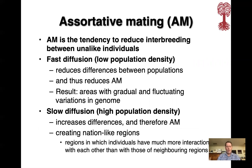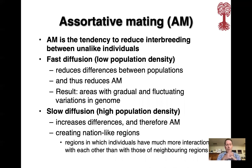Another factor to consider is assortative mating — the tendency to reduce interbreeding between unlike individuals. If you have fast diffusion due to low population density, that reduces the differences between populations, i.e. the gradients, and that in turn reduces assortative mating. The result is areas with gradual and fluctuating variations in genome. On the other hand, slow diffusion in high population density produces high gradients — big differences between adjacent populations — which encourages assortative mating. What you actually get are nation-like regions, where individuals have much more interaction with others within the region than with those of neighboring regions.